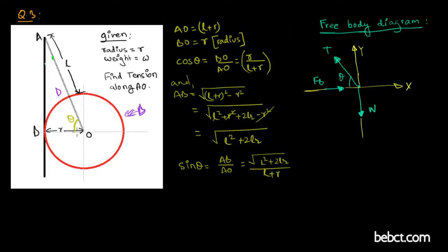There is some kind of wall or support, and say this is M. Now geometrically, AO is sum of L and R. BO is the radius.